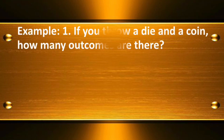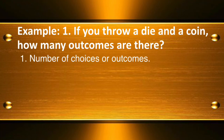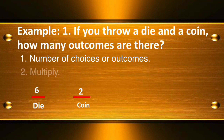Example 1: If you throw a die and a coin, how many outcomes are there? First, identify the number of choices. For a die, we have six choices; for a coin, we have two choices. Using the Fundamental Counting Principle, we multiply: 6 times 2 equals 12 outcomes.